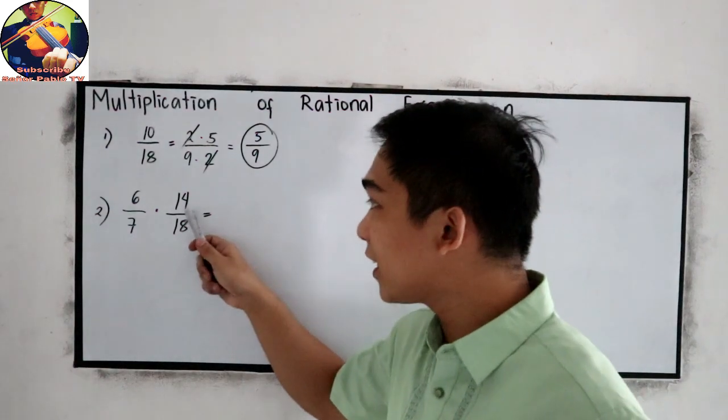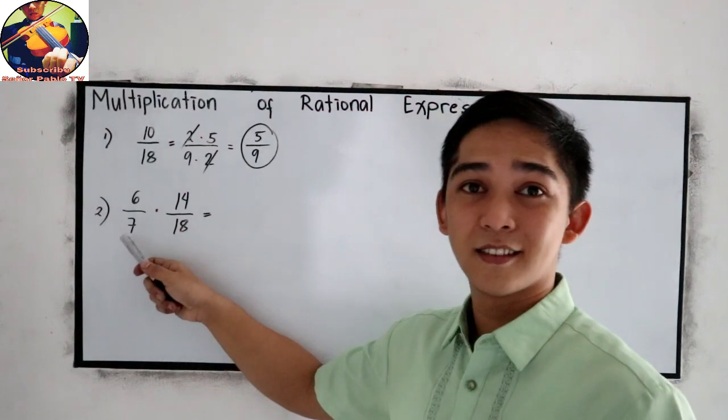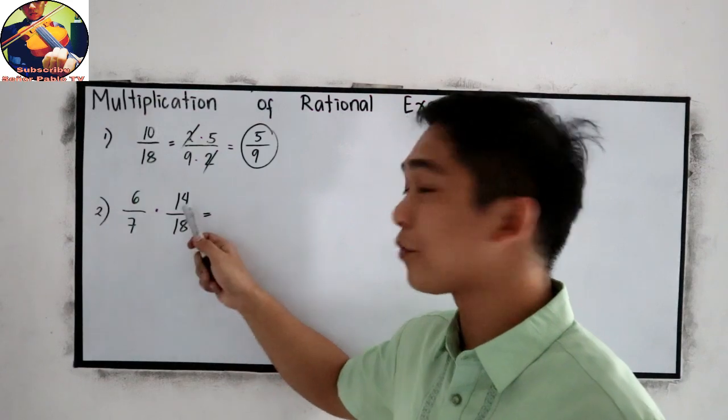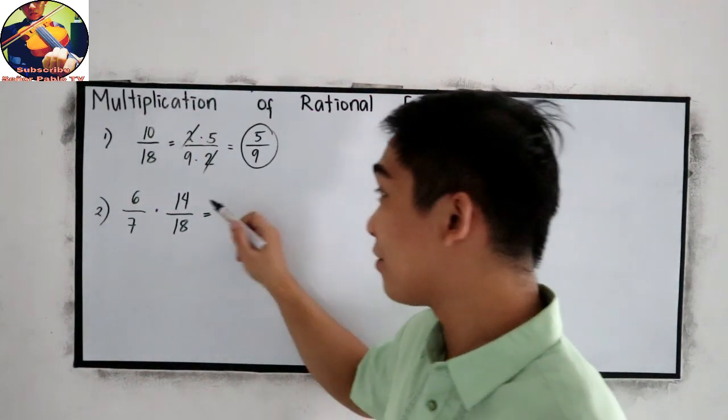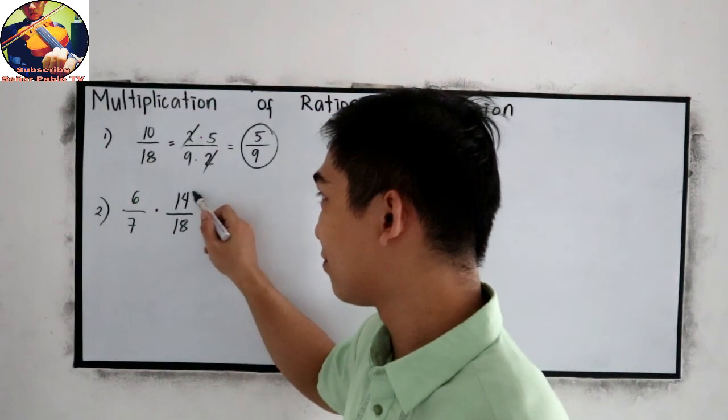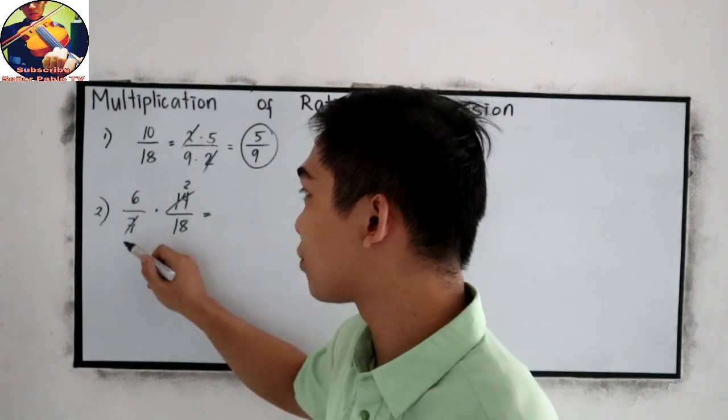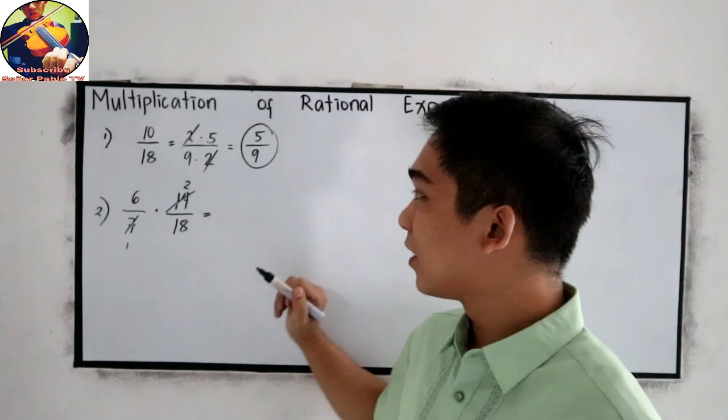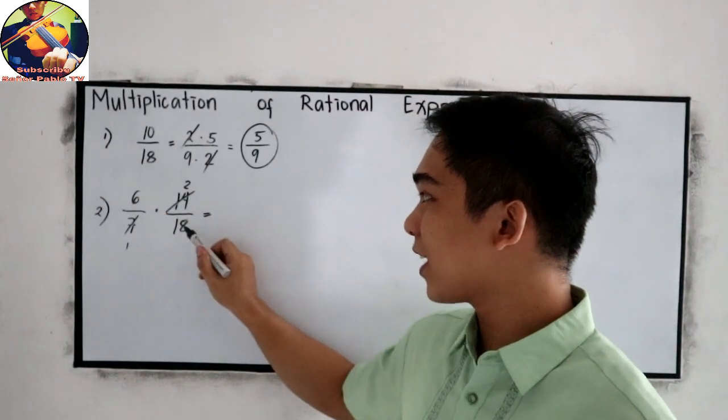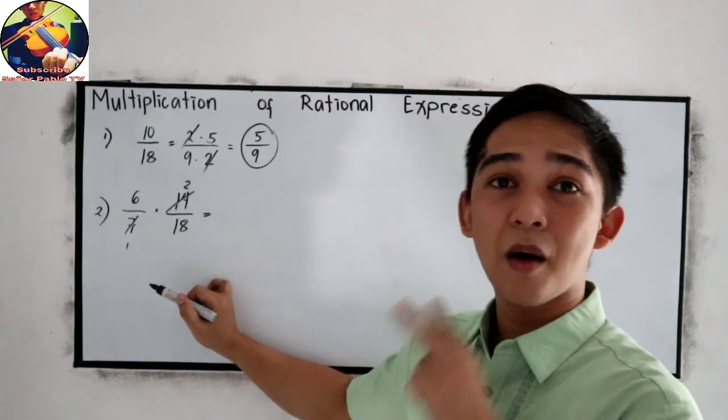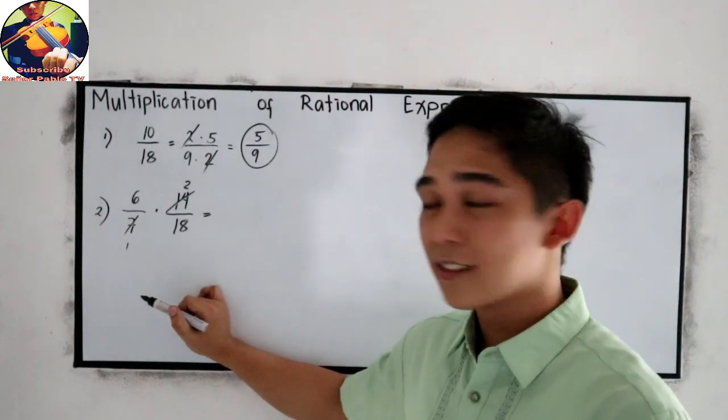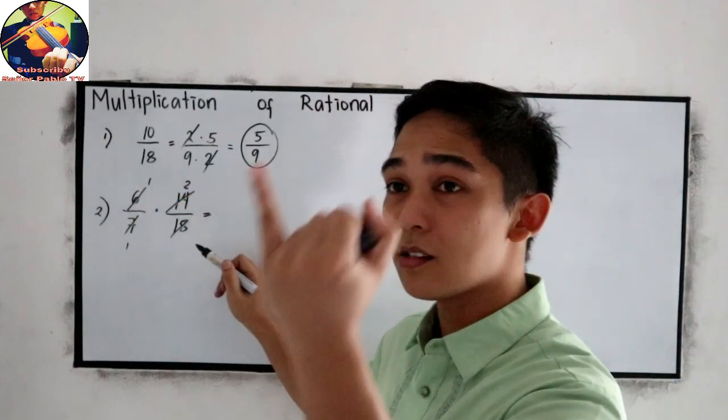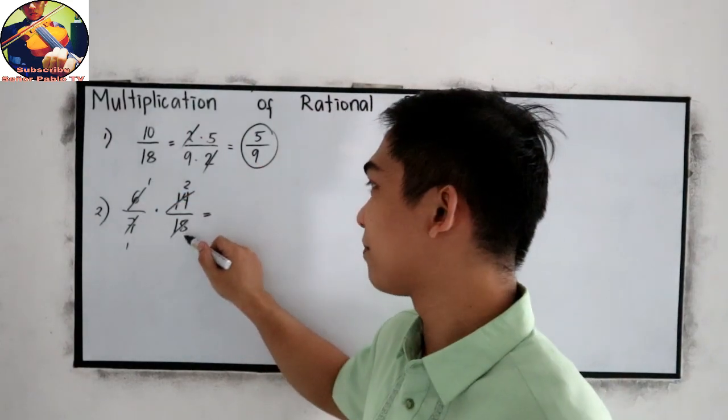So 14 and 7, if I am going to divide 7 to 14, that will give me 2, and this will become 1. Next, 6 and 18. Both numbers are divisible by 6. So this will become 1, and this will become 3.